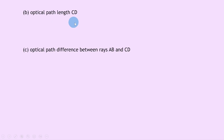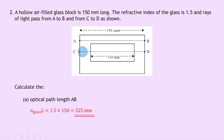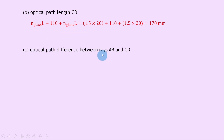Part B says to calculate the optical path length CD. The block is 150mm long with a 110mm hollow section cut out, leaving 40mm of glass split equally as 20mm on each side. So the optical path length CD = N_glass × 20mm + N_air × 110mm + N_glass × 20mm = 1.5 × 20 + 110 + 1.5 × 20 = 170 millimeters.